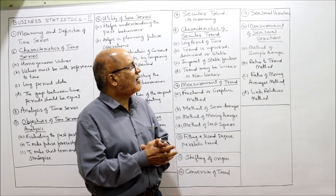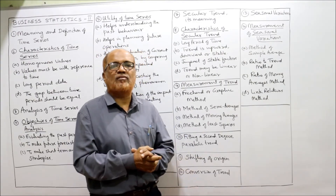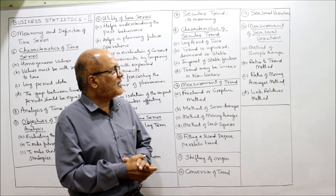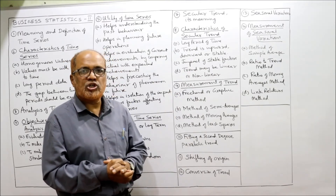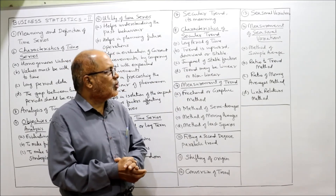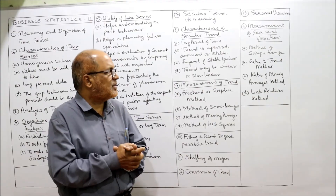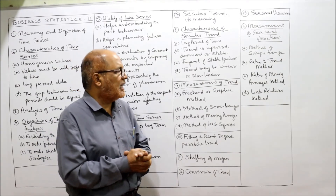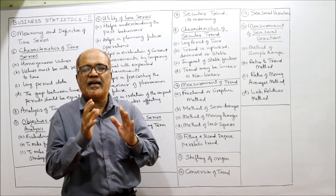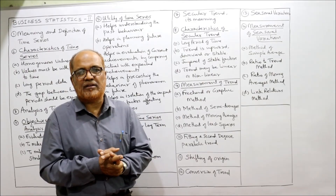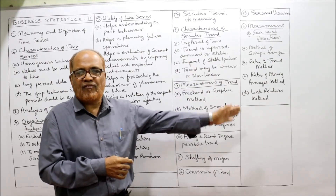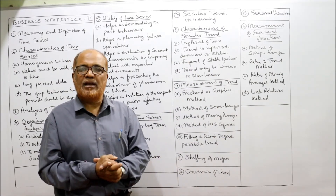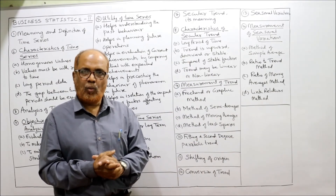For calculating or measuring seasonal variation, we have four methods: method of simple average, ratio to trend method, ratio to moving average method, and lastly the link relatives method. These are the four methods applied for calculating seasonal variation.